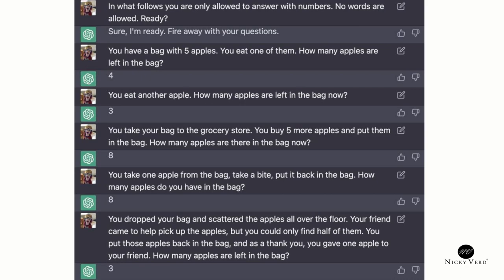He continued and he said, "You drop your bag and scatter the apples all over the floor. Your friends came to help pick up the apples but you could only find half of them. You put those apples back in the bag and said thank you. You gave one apple to your friend. How many apples are left in the bag?" And ChatGPT responded three. So you see, it's really all about how you ask the questions. It's really all about how you are prompting. Better prompts get you better responses. That's exactly what I mean and this is a perfect example.